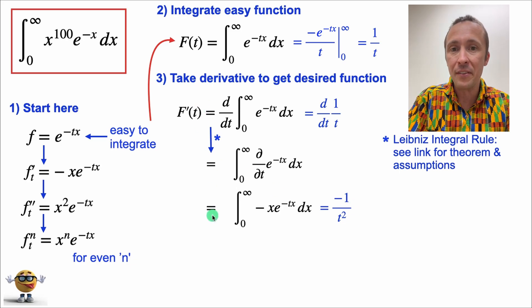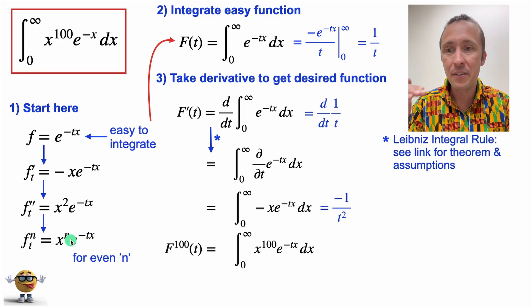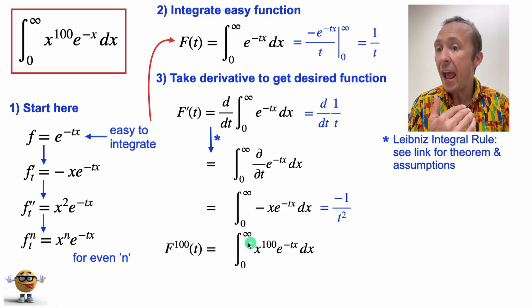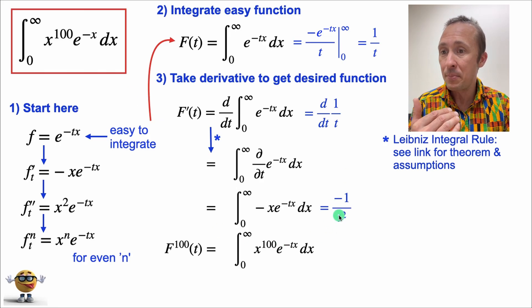Now, if we continue to take the derivative 100 times, that's like n times, right? If we just use this formula here, this patterning of taking the derivative that number of times, we get the integral from 0 to infinity of x to the 100, because that's like our n, x to the n, times e to the negative tx. And this, my friends, is very close to the integral that we want to integrate.